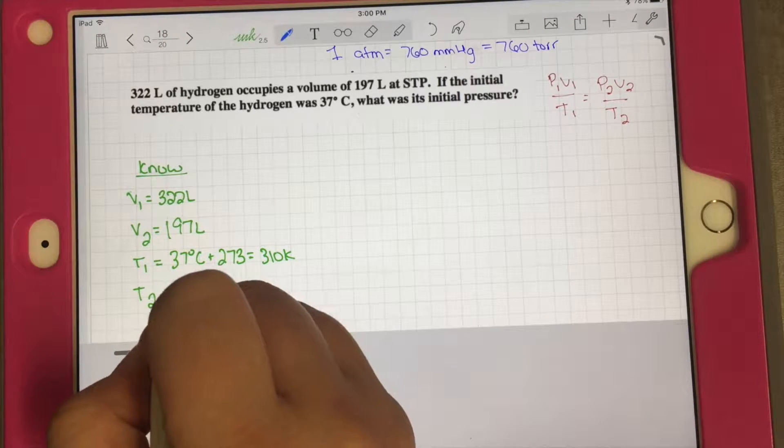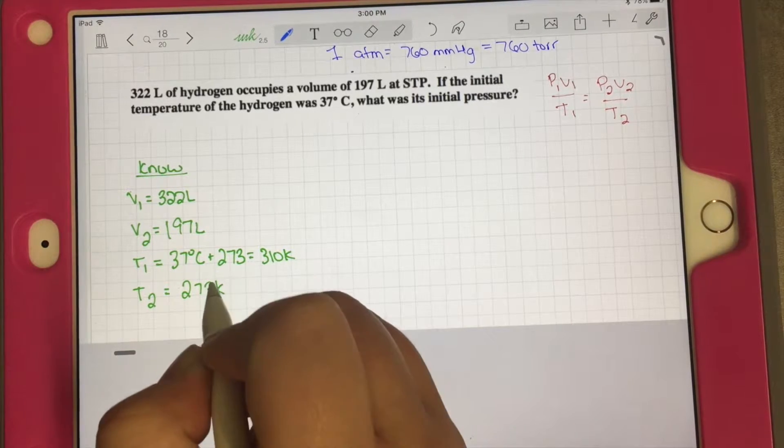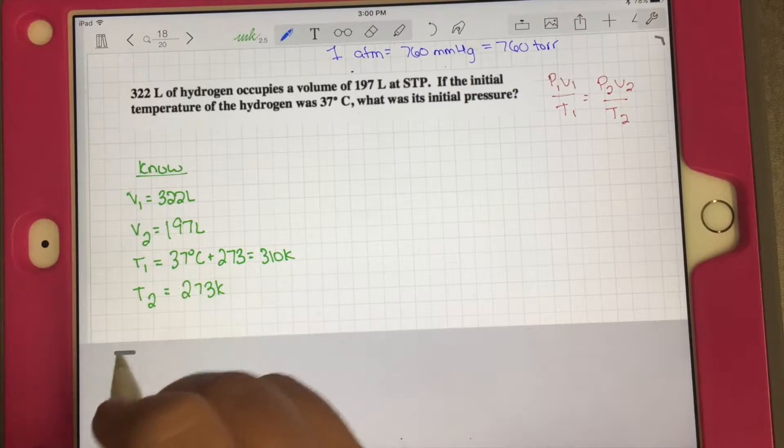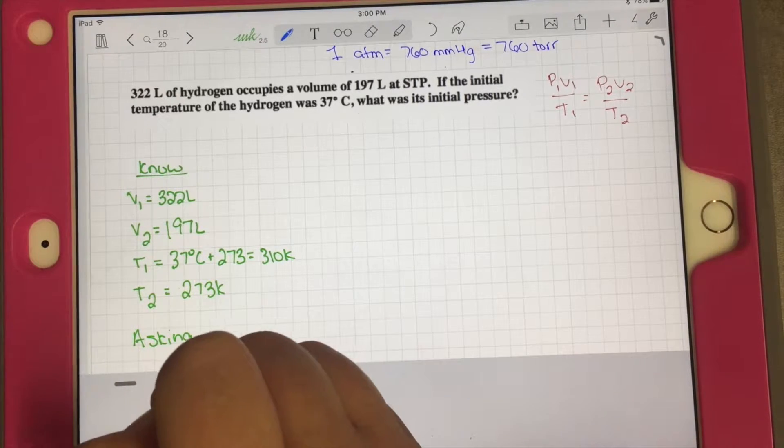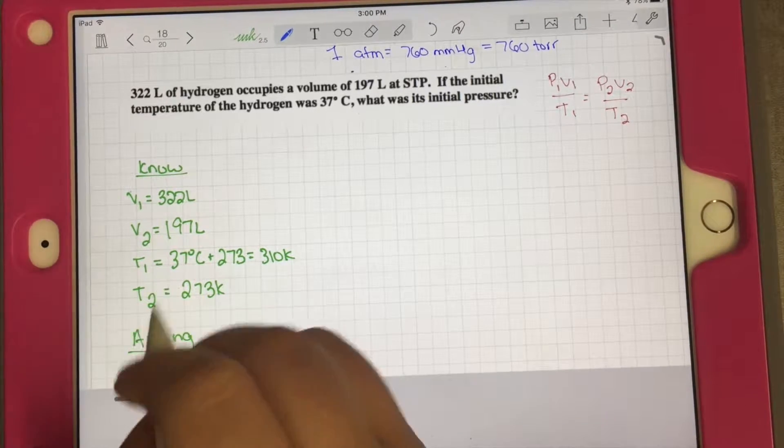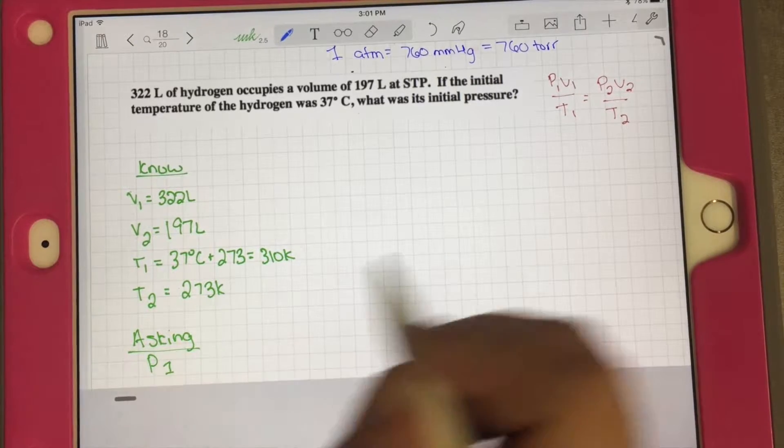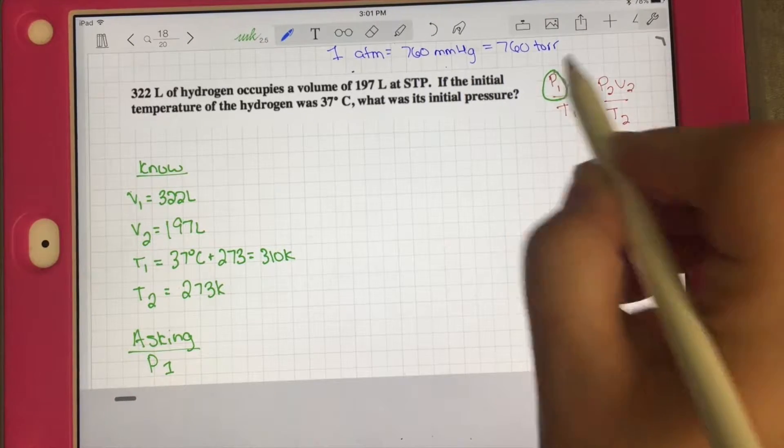They're asking for initial pressure, P1. So this is what we're looking for, and we have to rearrange our equation to get P1.